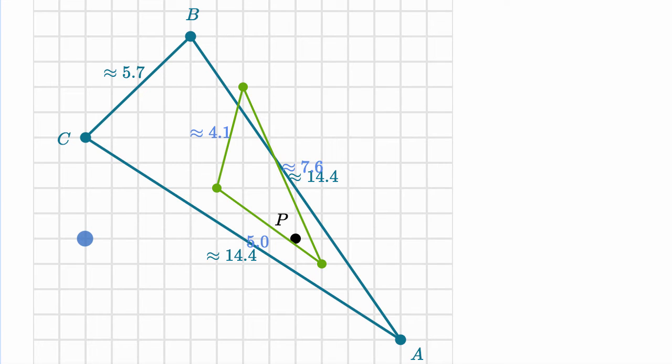Now if we have a scale factor of 1/4th, we just multiply each of those by 1/4th. So instead of going to the left 8, we would go to the left 2. 8 times 1/4th is 2. Instead of going up 4, we would go up 1. So this would be the corresponding point to point C.